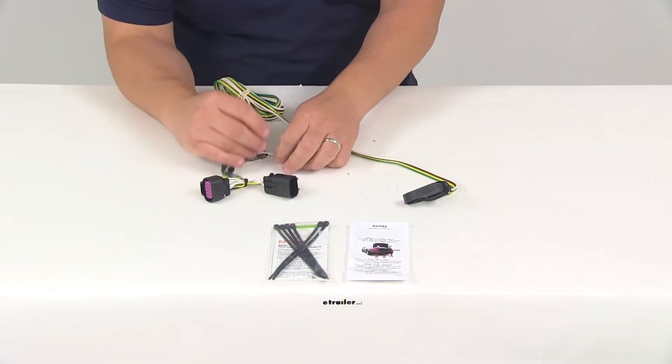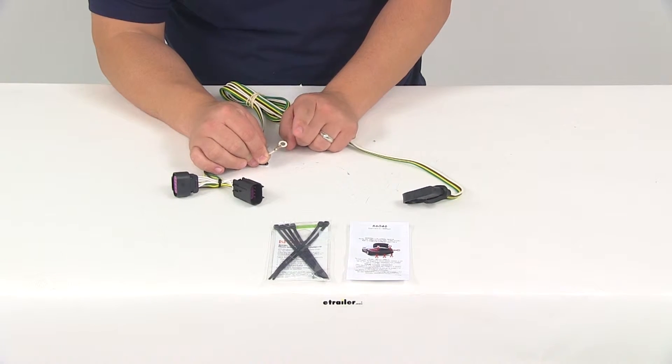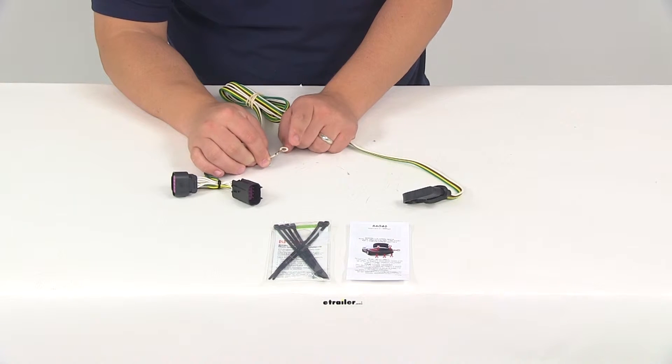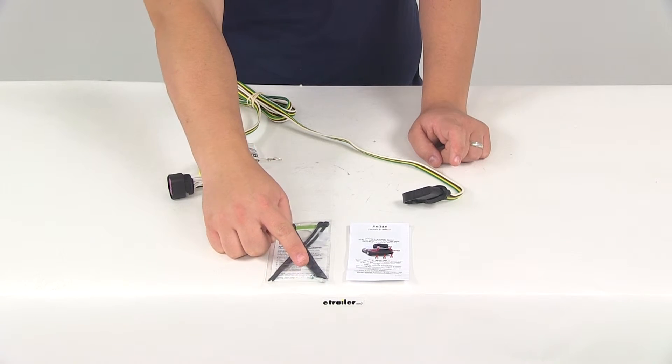Once you have that connected, you'll need to make your ground connection. There's a white wire with a ring terminal attached to it. You can make that ground connection to a clean metal surface with the included self-tapping screw provided in the hardware kit.